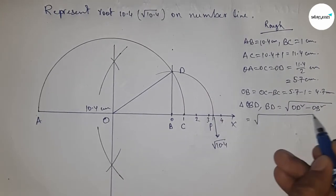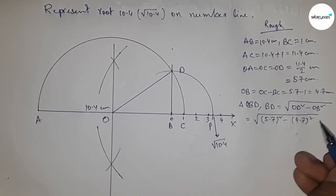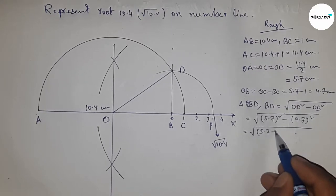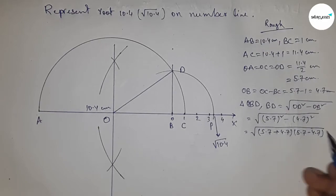Putting the values of OD and OB, I'm going to use the formula a squared minus b squared equals (a plus b) times (a minus b). Applying the formula here.